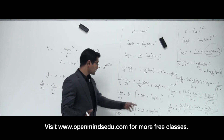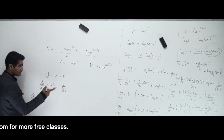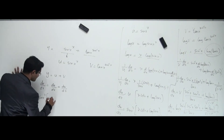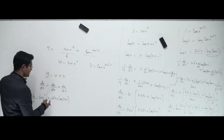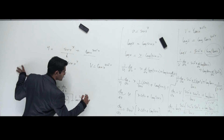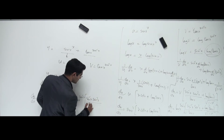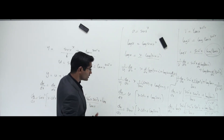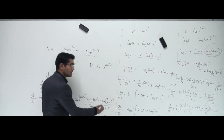Now the complete answer: dy/dx = du/dx + dv/dx. That is (sin x)^x · (x·cot x + log sin x) plus (tan x)^(sin⁻¹x) · [sin⁻¹x · sec²x / tan x + log(tan x) / √(1 - x²)]. That's your final answer.